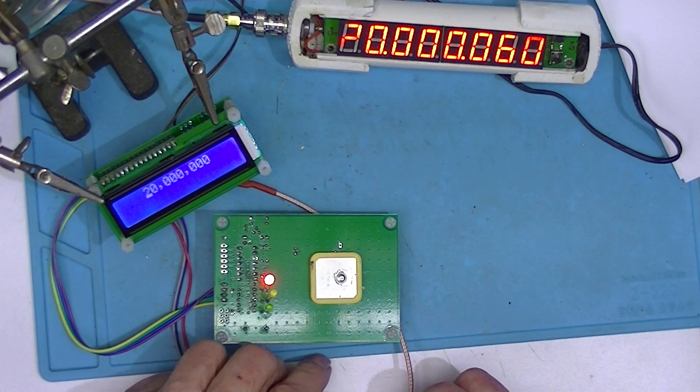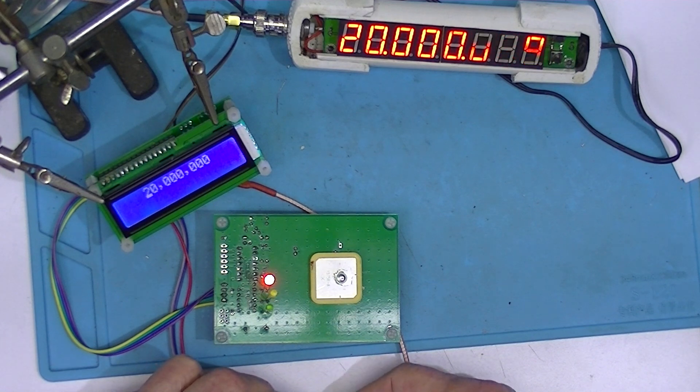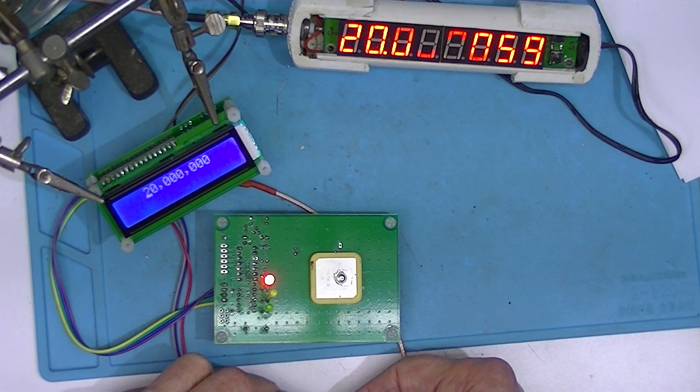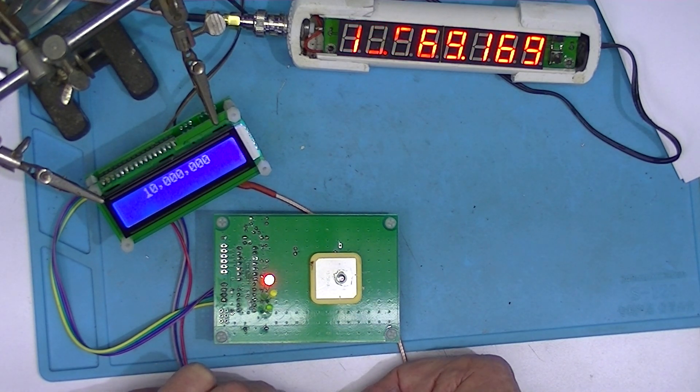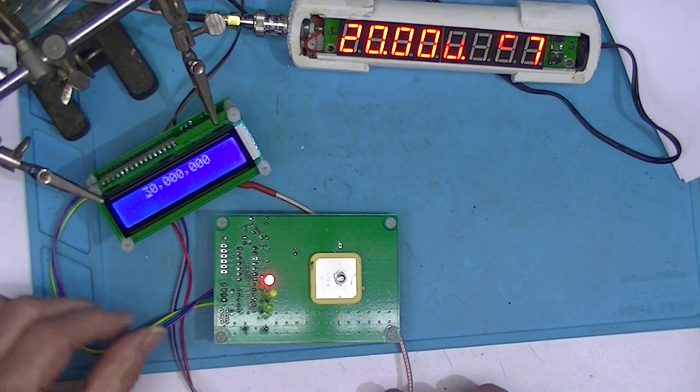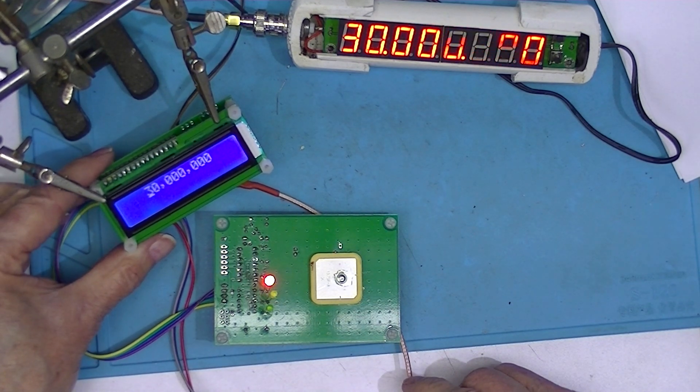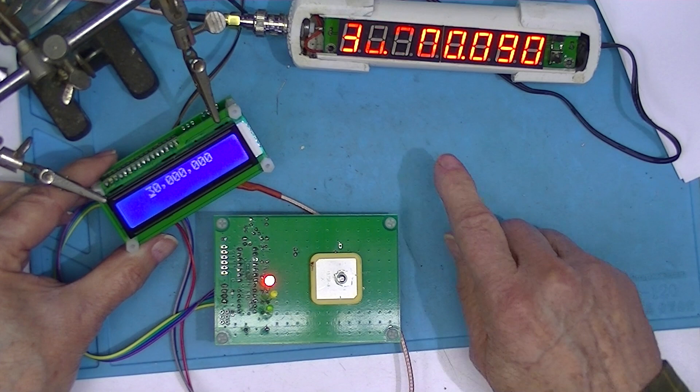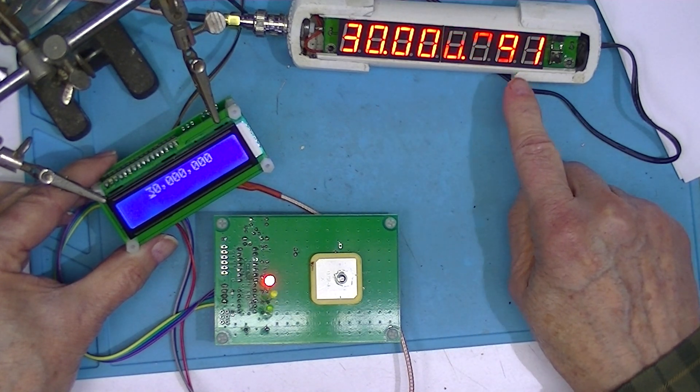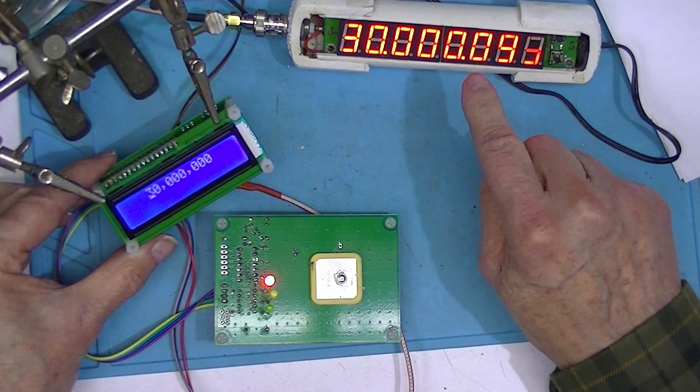So if we go to 30 megahertz, we get an error of 90 hertz. That error is inside this frequency meter.